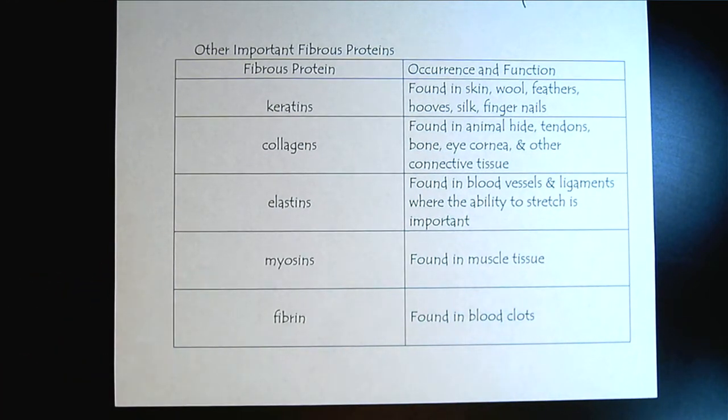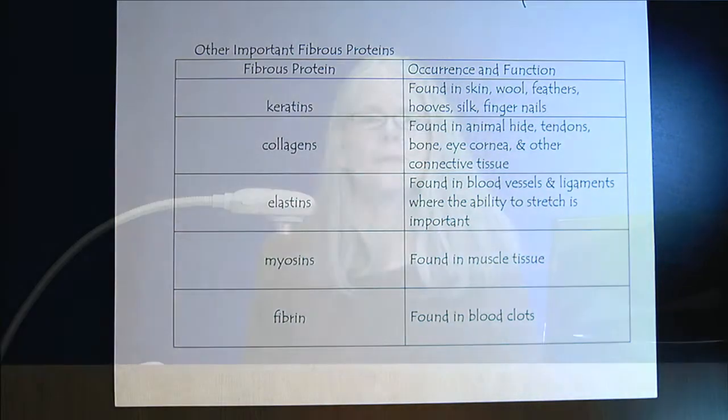That concludes our tutorial on the secondary structure. The main thing to keep in mind is the alpha helix versus the beta sheet and that it's H-bonding within the polypeptide backbone. Please take some time now to work a few homework problems to reinforce your understanding.